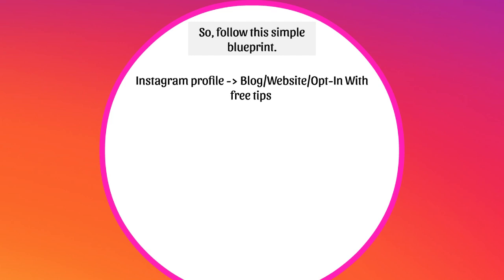If you send them to a blog with more content and free information, that's going to gain their trust — they're more likely to want more. Or if your brand is established, you can send them directly to your website and they can buy products. You can also use an opt-in with free tips or a squeeze page to build your list first, because what I've found is that it takes seven to twelve times to actually touch the person and get to know them before they actually buy. Those touch points mean emails.